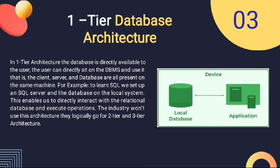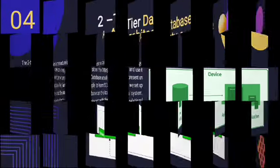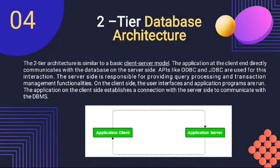For example, you can understand the one-tier architecture as a mobile application that uses Realm, the open-source mobile database by MongoDB, as a local database. In this case, both the application and the database are running on the user's mobile device. From the given diagram, we can understand that in a single-tier application, the application and the database reside on the same device.